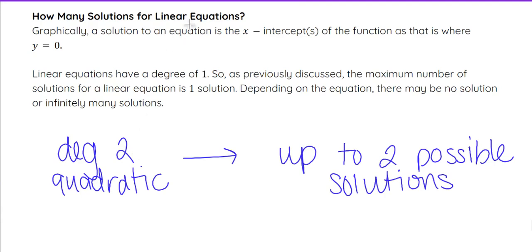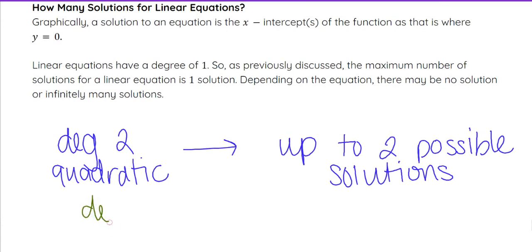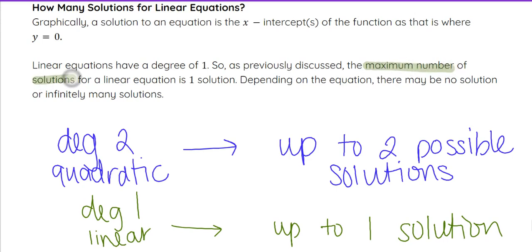But with linear equations, remember linear equations are degree 1. That tells us they have up to 1 solution. It could be 1 solution, it could be 0 solutions, but it is degree 1, so that is the maximum number of solutions for a linear equation. Depending on the equation, it could have no solution or what we call infinitely many solutions, which we'll talk about as well.